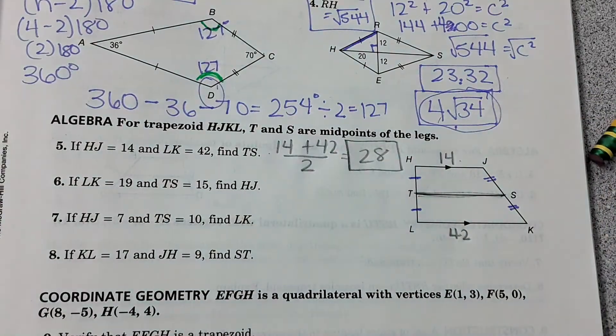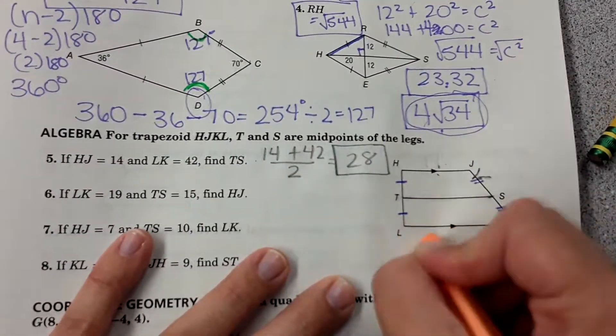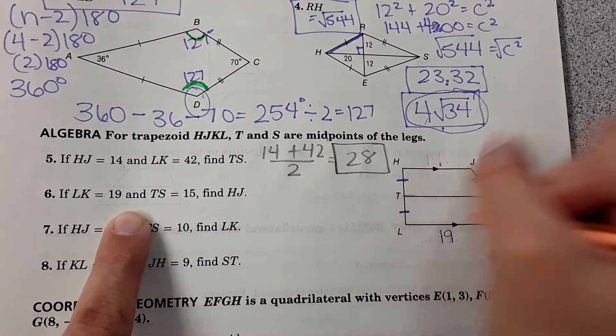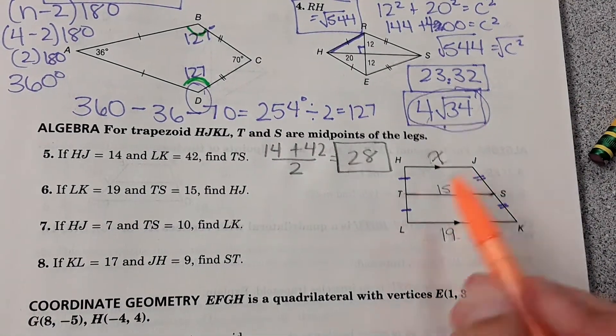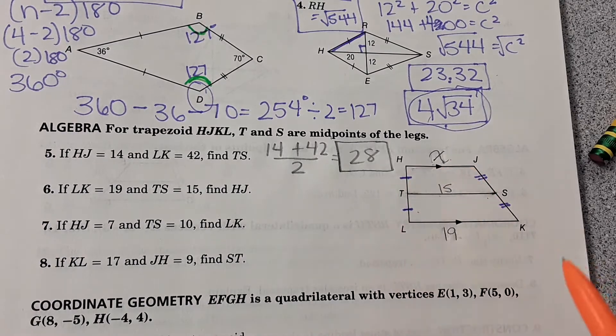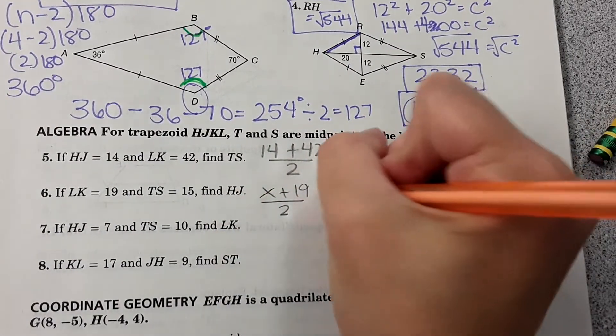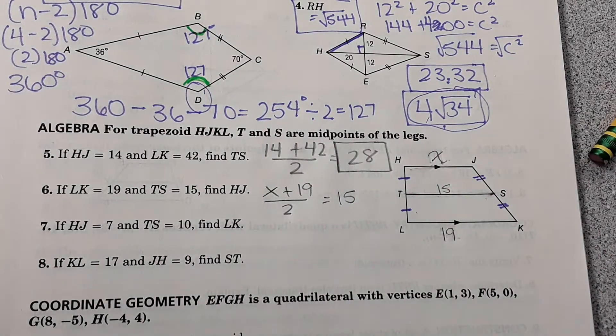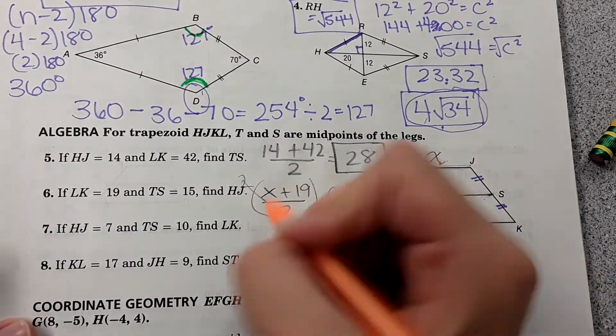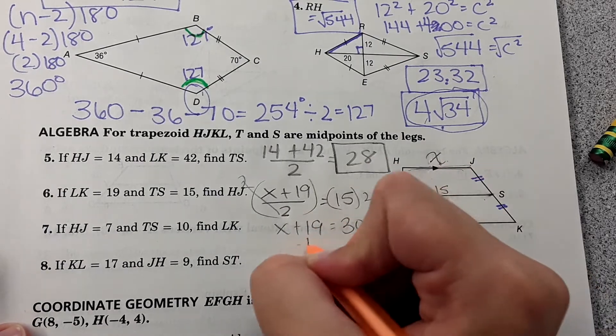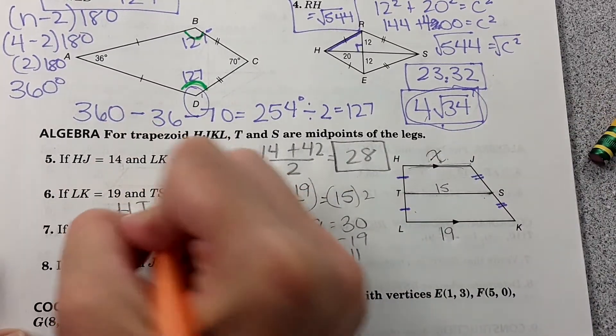Number six. This time it says LK is 19, TS is 15, find HJ. So this time they gave us the length of the midsegment. We need to find the length of the base. So for this one, X plus 19 divided by 2 equals 15. We can solve for X which will be this length here. So multiply both sides by 2. X plus 19 equals 30. Subtract 19. X equals 11. So HJ equals 11 units.